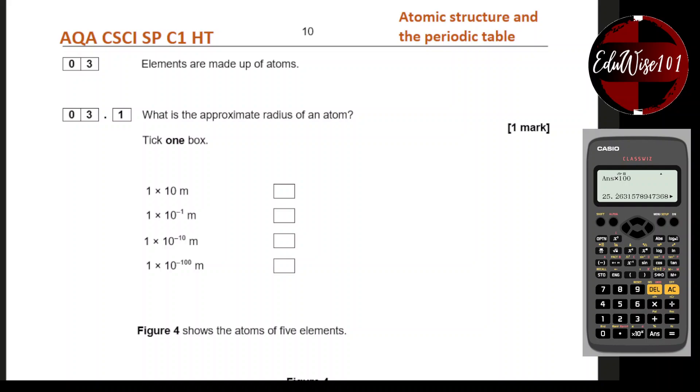Hello everyone, this is Ketish here. In this video, I'm going to go through the AQA Combined Science Specimen Paper for Chemistry Paper 1. This is question number 3, testing on the topic of atomic structure and the periodic table.